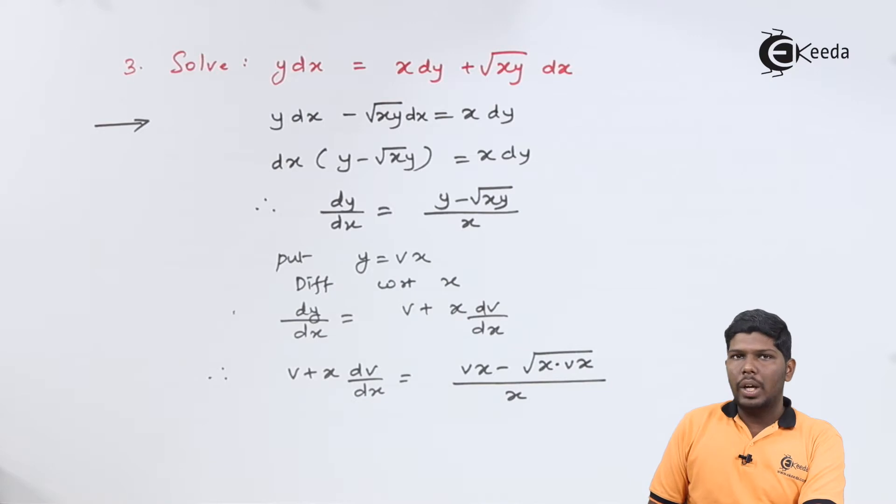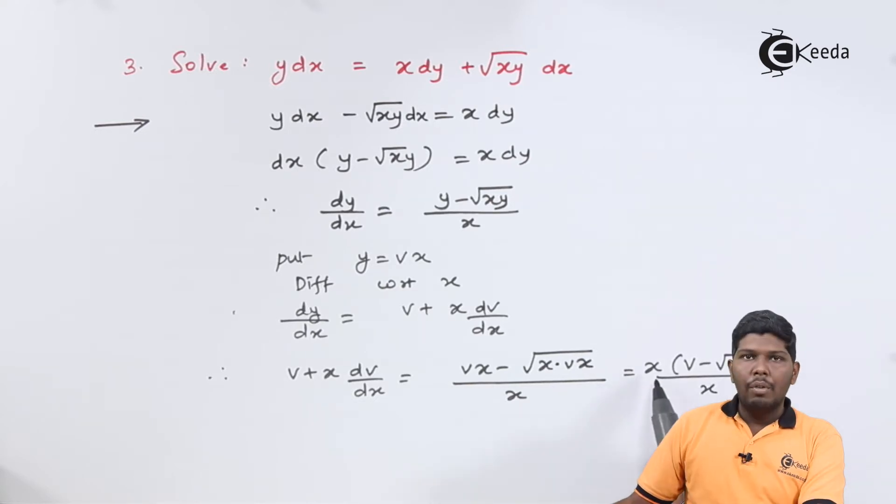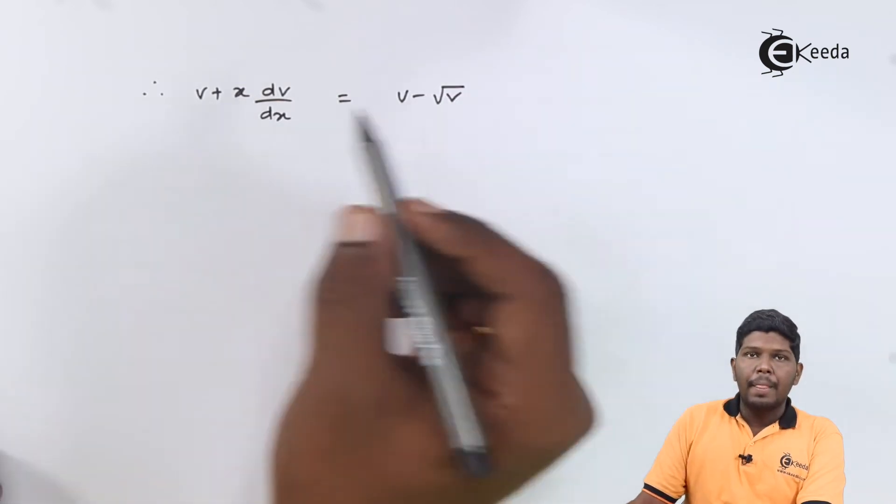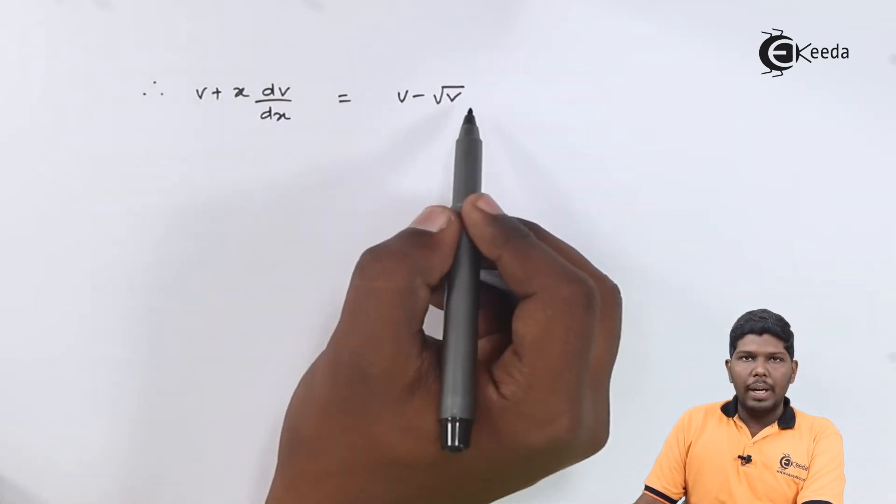Here, as you can see, we have x into x that is x square and square root of x square is x. And taking that x common from both the terms present in the numerator, we will get x into v minus root v upon x where x will be cancelled.